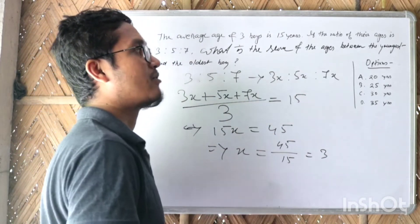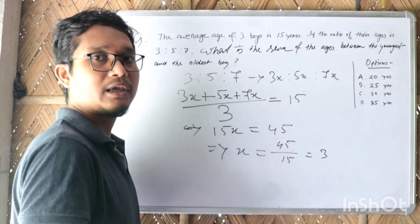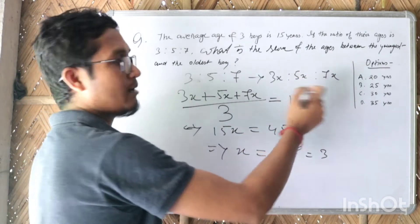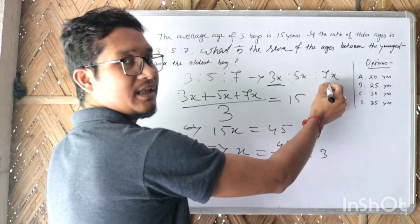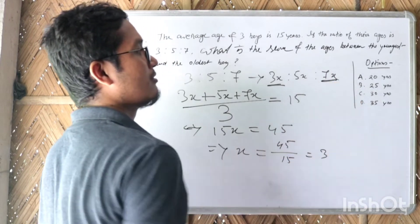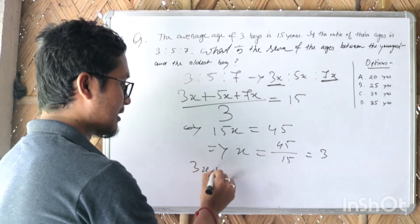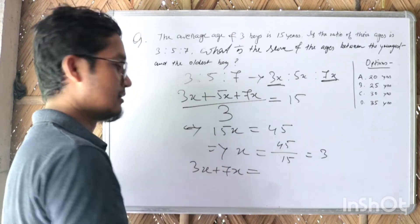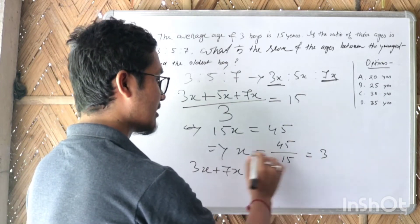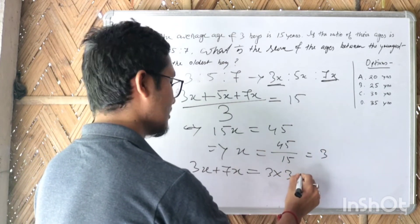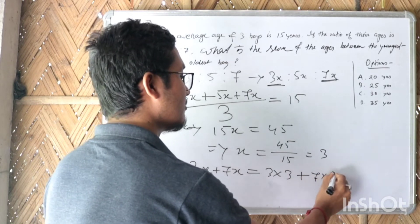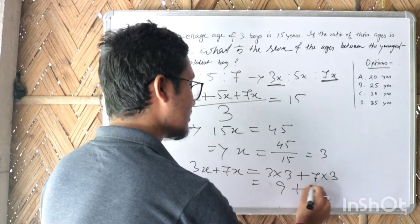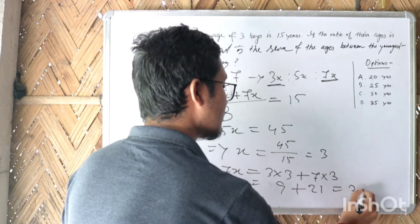So what is the sum of the ages of the youngest and the oldest boy? The youngest boy's age is 3x and the oldest is 7x. So 3x plus 7x equals 3 times 3 plus 7 times 3, which is 9 plus 21 equals 30.